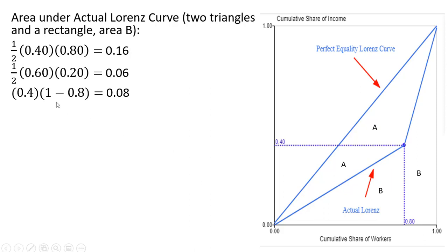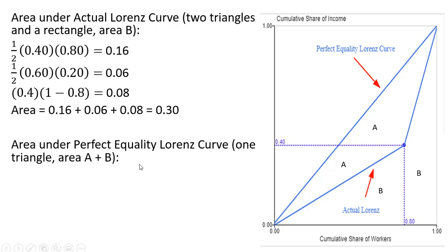And then finally our rectangle: the area of that is width times length. We have 1 minus 0.8, or 0.2, as one dimension, and 0.4 as our other dimension. So the area of the rectangle is 0.08. Adding all those areas up, area B equals 0.3.